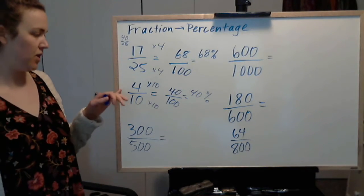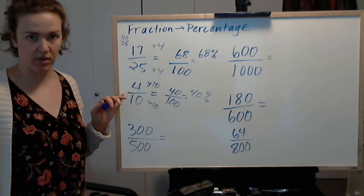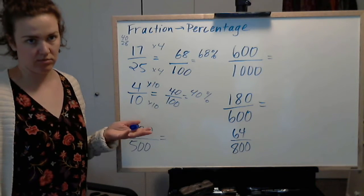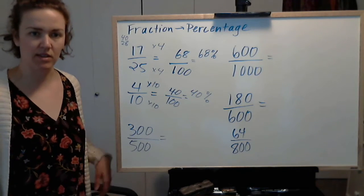And that makes sense, because 4 out of 10 is less than half, and 40% just kind of makes sense intuitively.